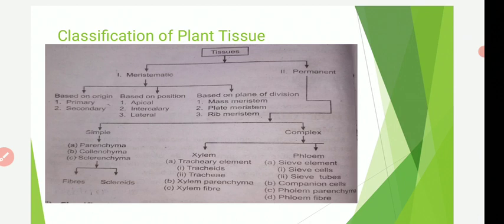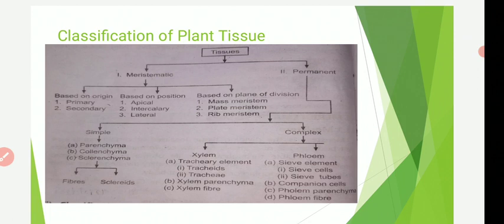Permanent tissue has lost the power of cell division and has developed a particular structure permanently for performing specific functions, hence they are known as permanent tissue. The cells of permanent tissue may be living or dead, and thin-walled or thick-walled. Permanent tissue may be simple or complex. In simple tissue, the tissue is made up of one type of cell forming a homogeneous system; simple tissues are known as ground tissue. Complex tissue is made up of more than one type of cell, and the common examples are xylem and phloem, which are also known as vascular tissue.